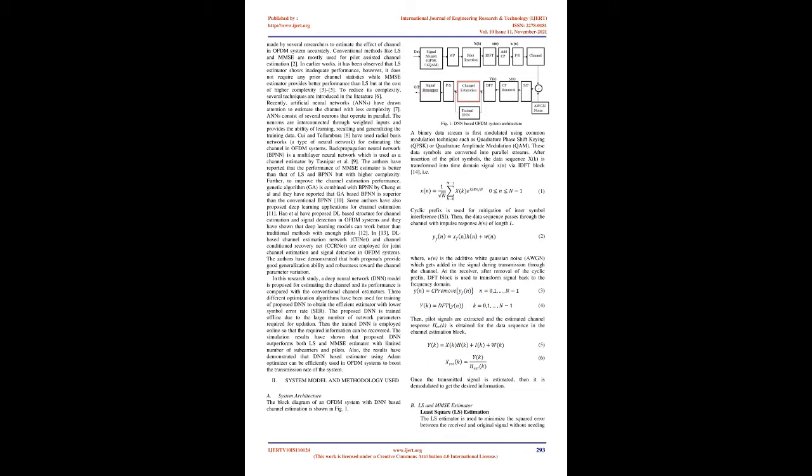ANNs consist of several neurons that operate in parallel. The neurons are interconnected through weighted inputs and provide the ability of learning, recalling, and generalizing the training data. Cui and Tellambura have used radial basis networks, a type of neural network, for estimating the channel in OFDM systems. Back Propagation Neural Network (BPNN) is a multi-layer neural network which is used as a channel estimator by Tasnip et al. The authors have reported that the performance of MMSE estimator is better than that of LS and BPNN but with higher complexity. Further, to improve the channel estimation performance, genetic algorithm (GA) is combined with BPNN by Cheng et al., and they have reported that GA-based BPNN is superior to conventional BPNN.